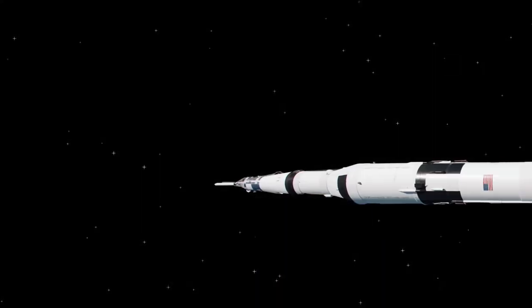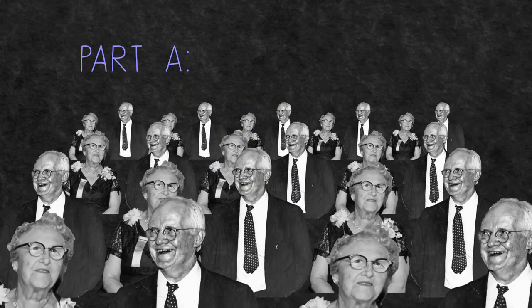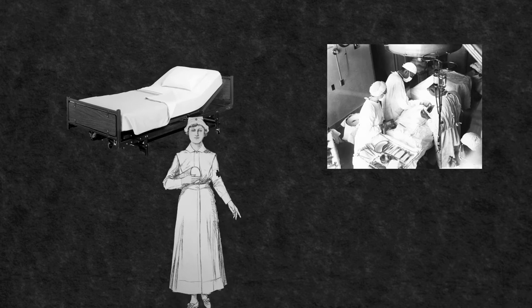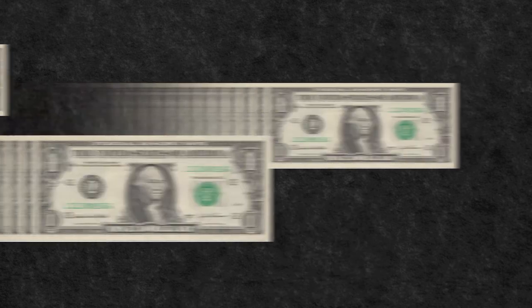The Medicare program is administered in four parts: A, B, C, and D. Let's start with Part A. Part A is the only benefit that people get automatically at no cost when they reach the age of 65, which is hospitalization, hospice, nursing home, and some health services. Once you pay the annual deductible, you are covered 100%. Part A is paid for through the HI Trust Fund.